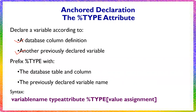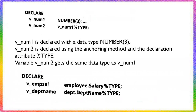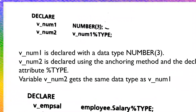This is the syntax for anchor declaration using percentage type. In the declaration section, you declare vnum1 with data type NUMBER(3) — that is one particular variable declared with data type NUMBER size 3. Then for vnum2, you declare it as vnum1%TYPE. The variable name is vnum2 and the type attribute references vnum1.